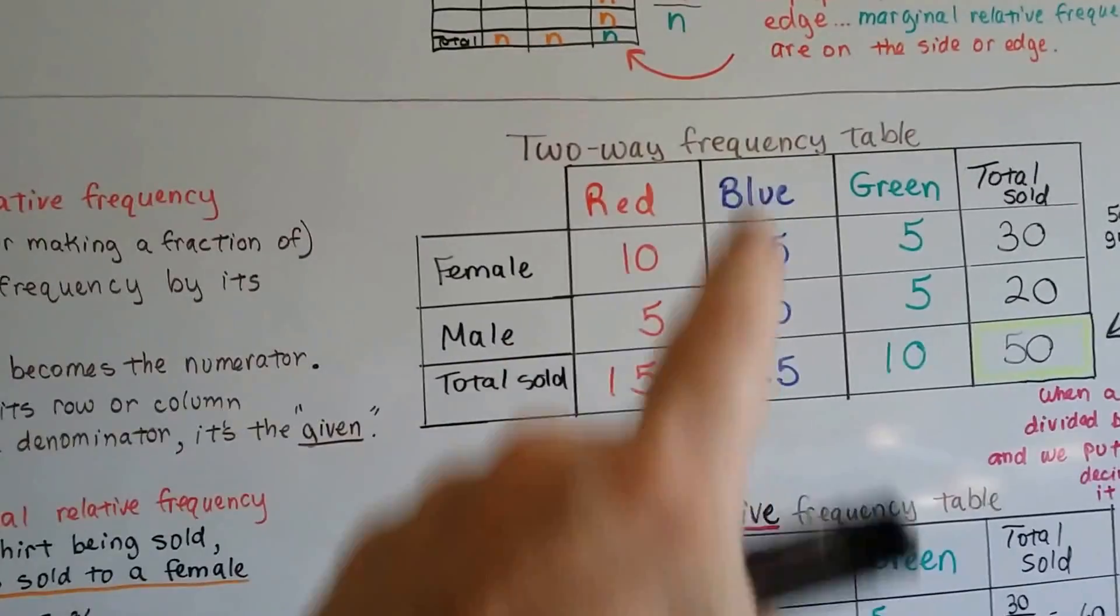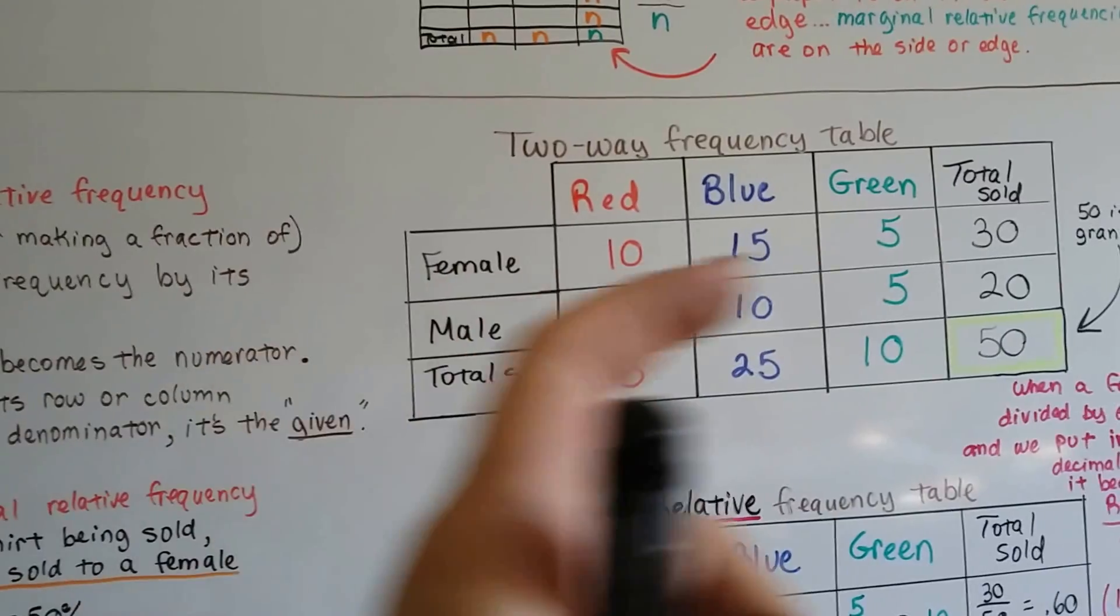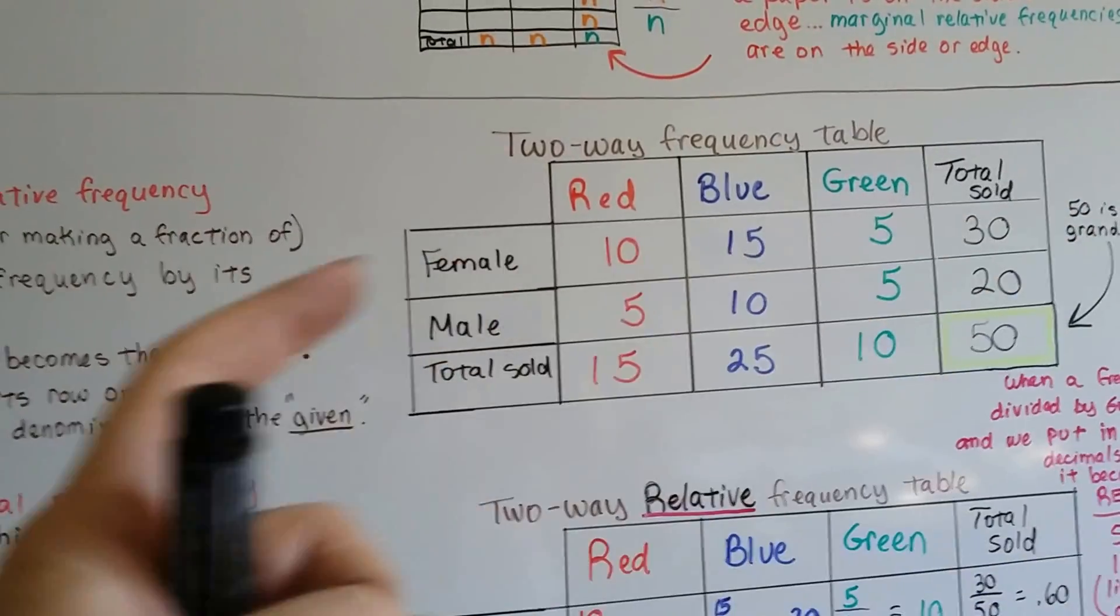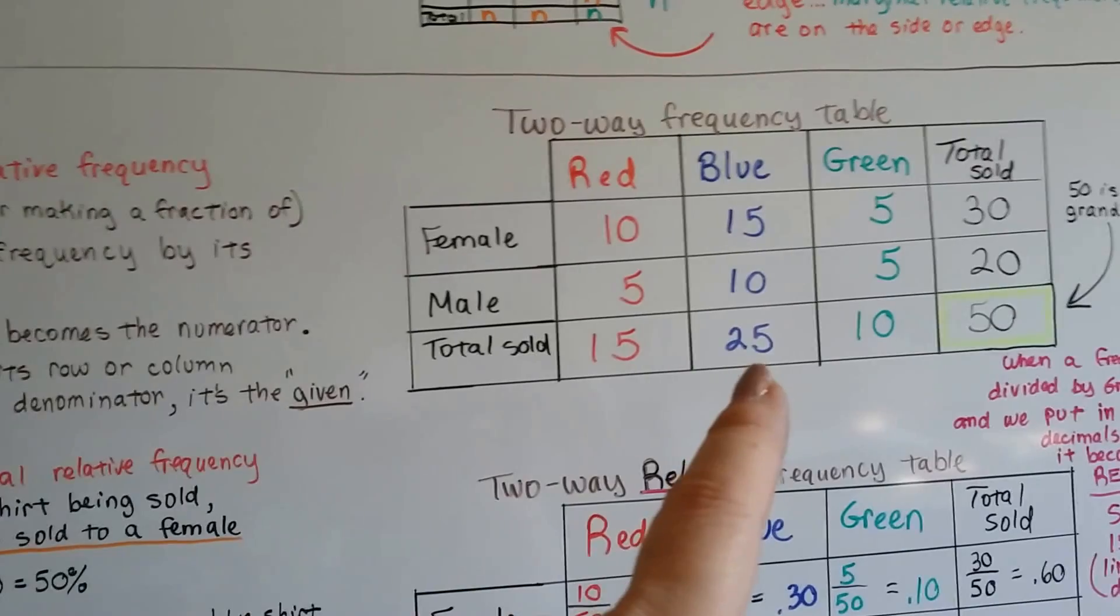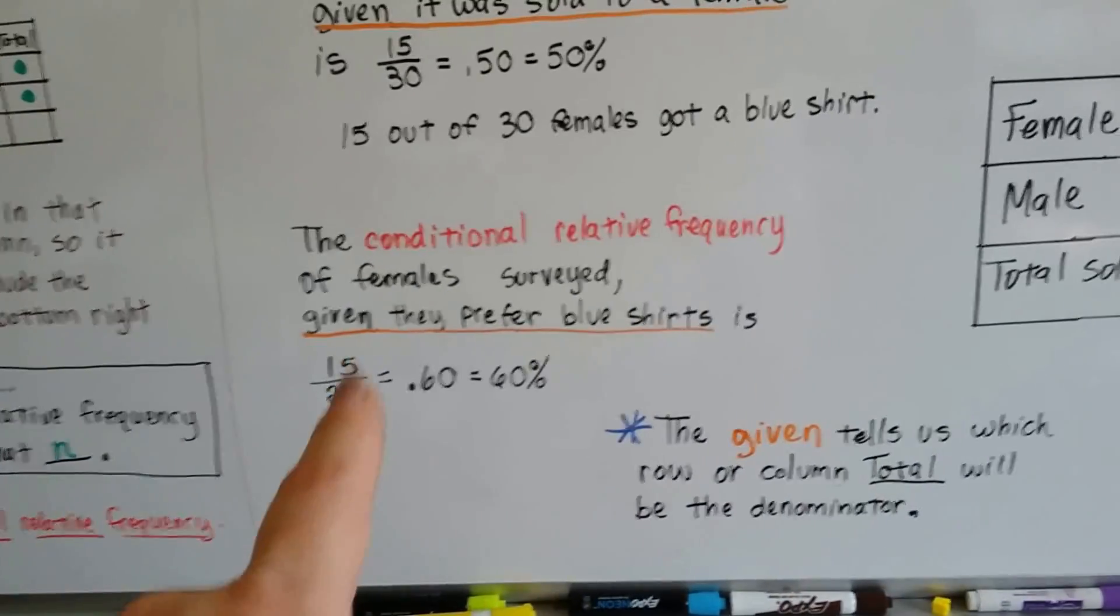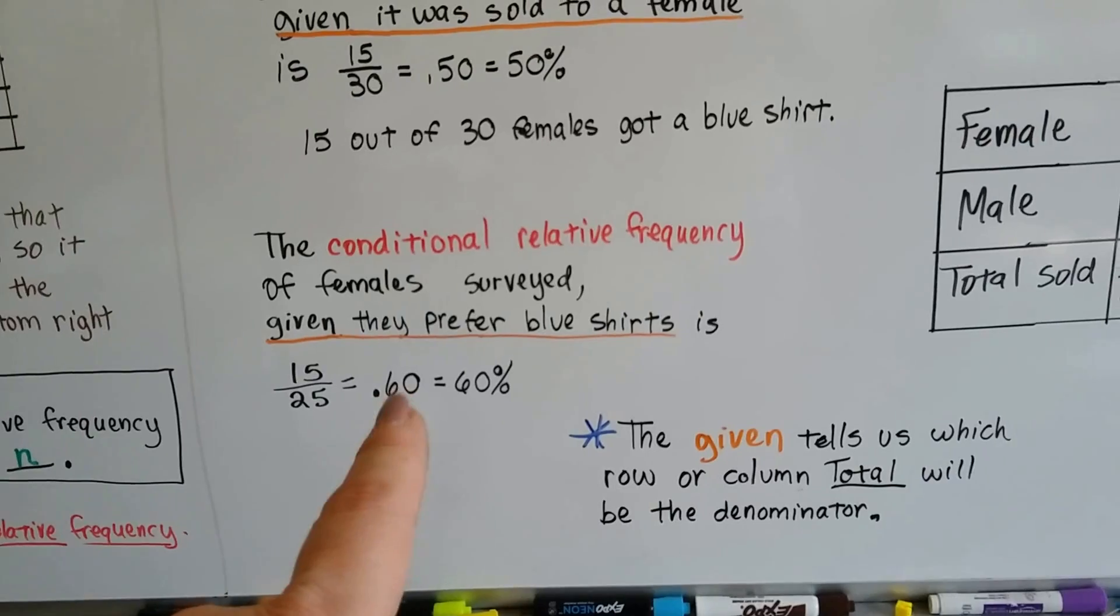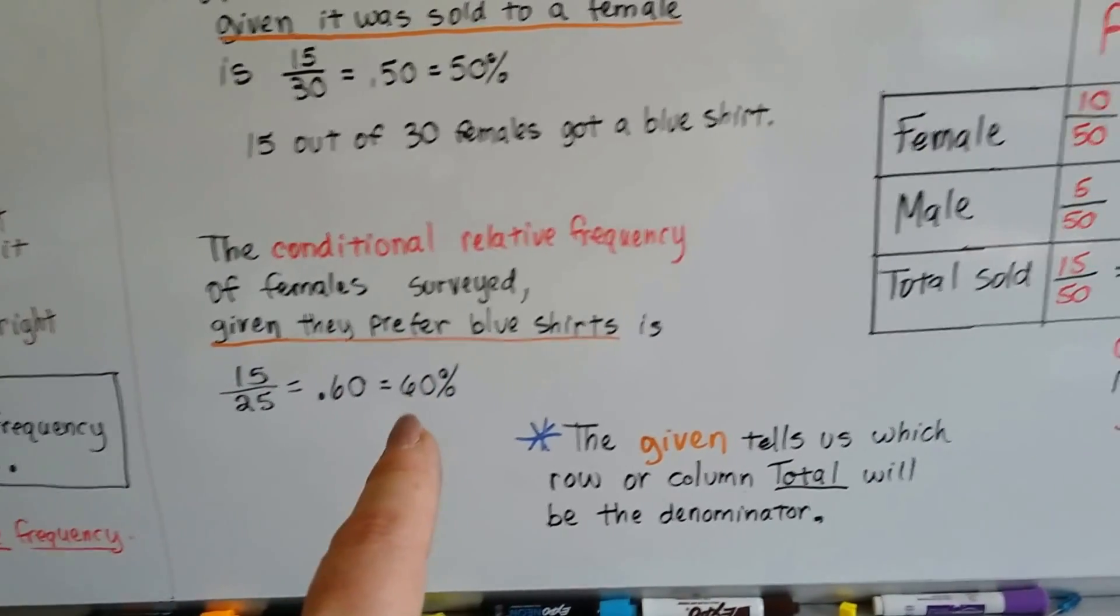So now we're coming down this way in a column. In the other one, we went this way in a row. So because the blue was the given, we use the total 25 and the 15 as the numerator of females. We have 15 over 25. We do our division. We get 0.60 or 60%. So remember, the given tells us the row or column total will be the denominator.